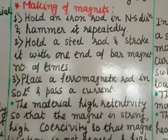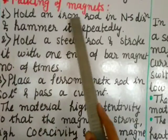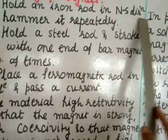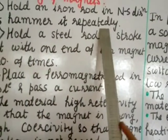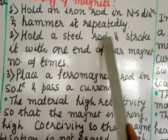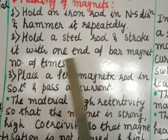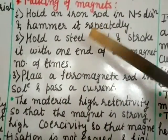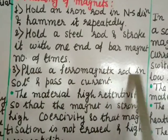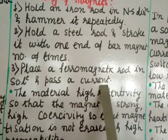We have got how to make the permanent magnet. In our textbook they have mentioned three ways. First, hold an iron rod in north to south direction and hammer it repeatedly. Second, hold a steel rod and stroke it with one end of bar magnet number of times. Third, place a ferromagnetic rod in a solenoid and pass a current.